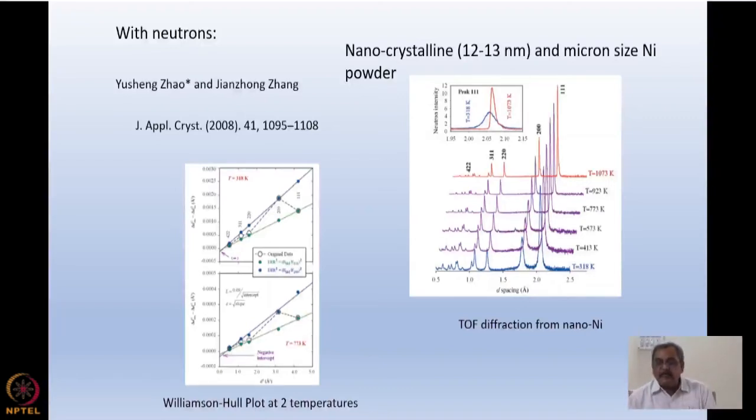Nanocrystalline means this micron size powder is also having nanocrystallites which are 12 to 30 nanometer or 120 to 130 angstrom large, and here there is a diffraction peak, time of flight diffraction peak. I must point out to you that this is a time of flight peak, that means this is just a mirror image of the kind of diffraction peak that you will get using neutron and monochromatic sources.